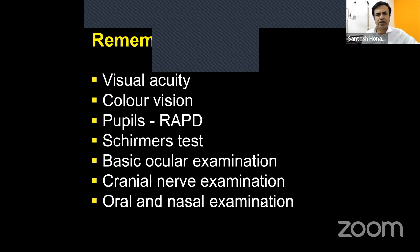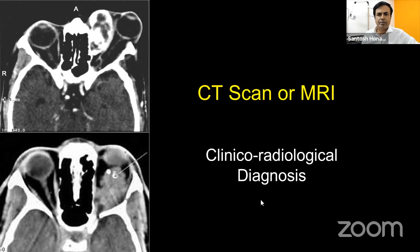Don't forget the rest of the eye — Schirmer's test is extremely important when looking at lacrimal gland lesions. Cranial nerve examination is important, and in patients where you suspect a secondary lesion coming from the paranasal sinus or nose, or a tumor extending to those areas, you must examine those areas as well.